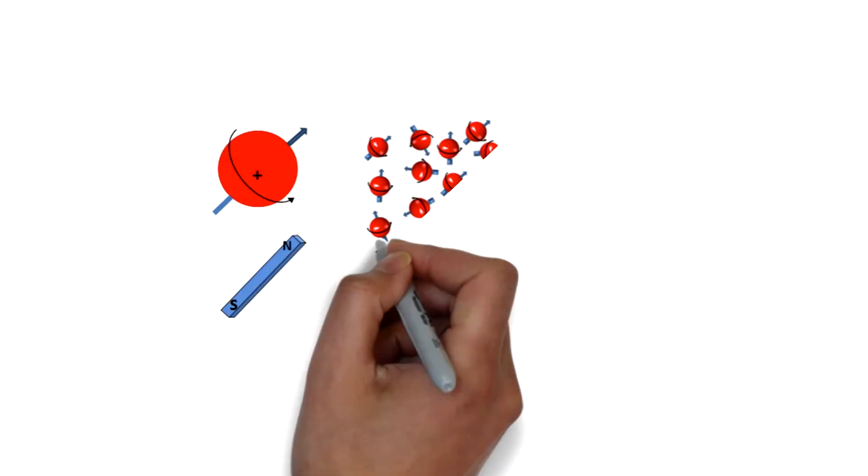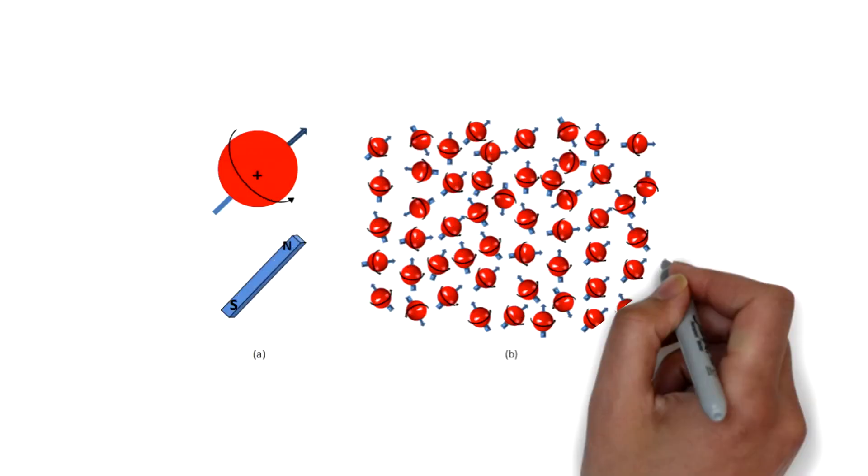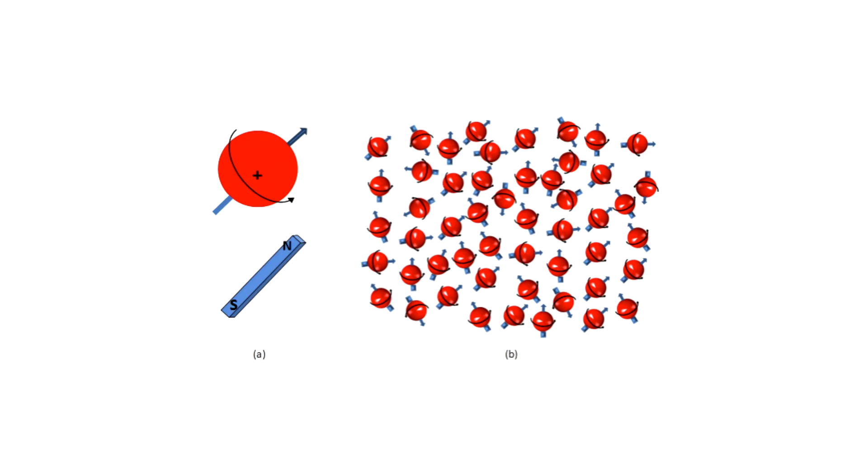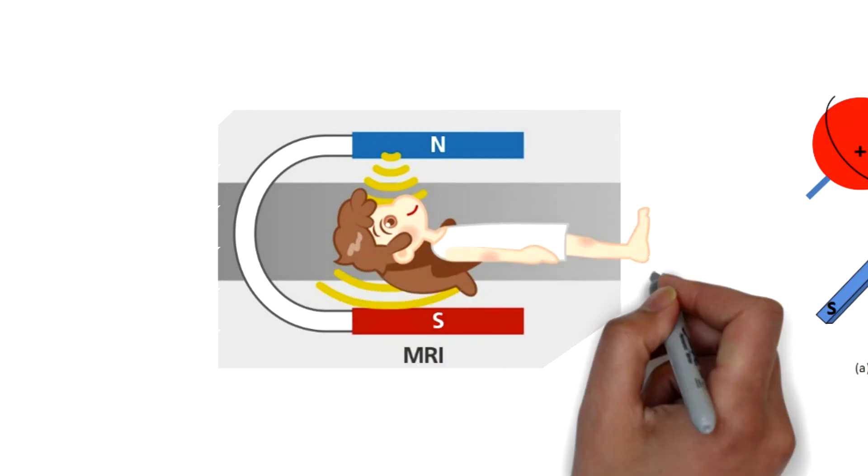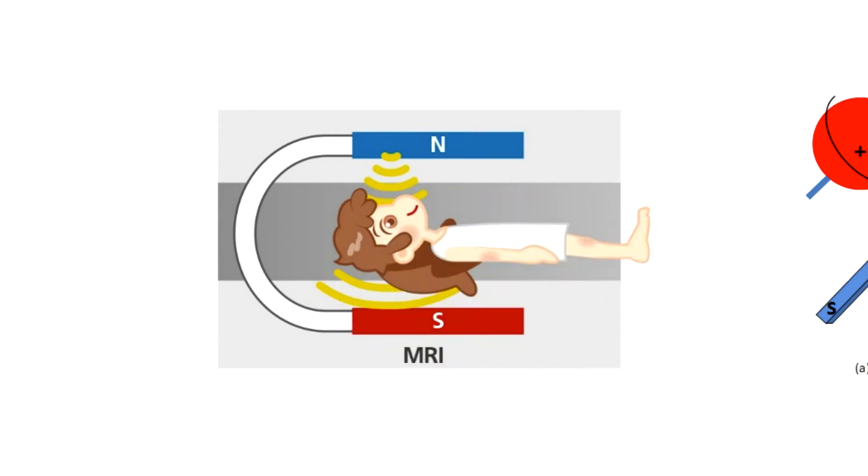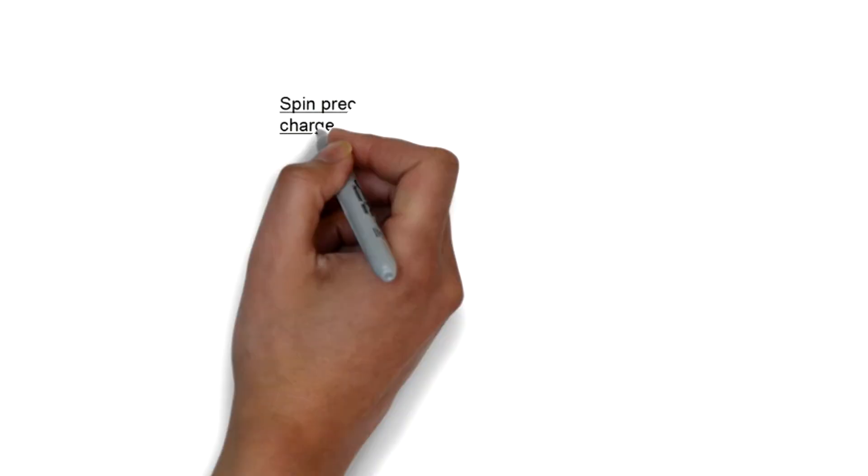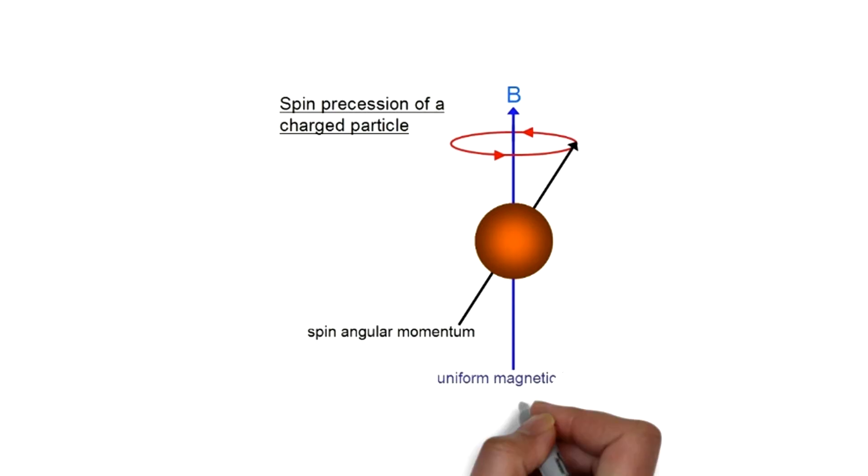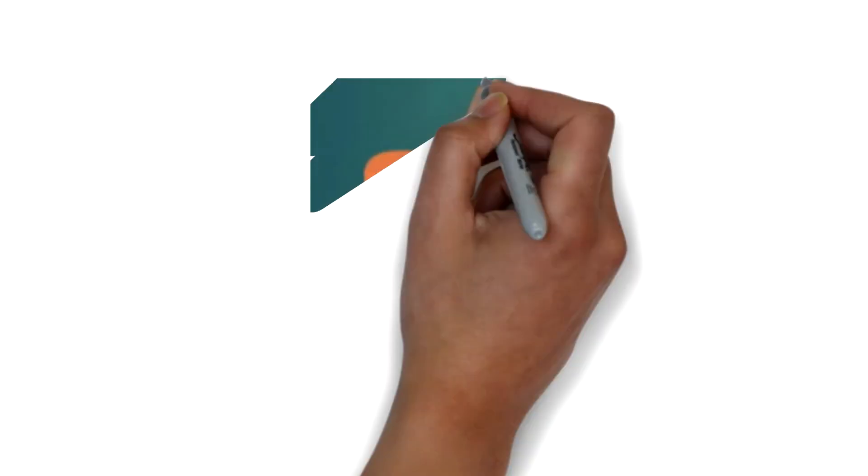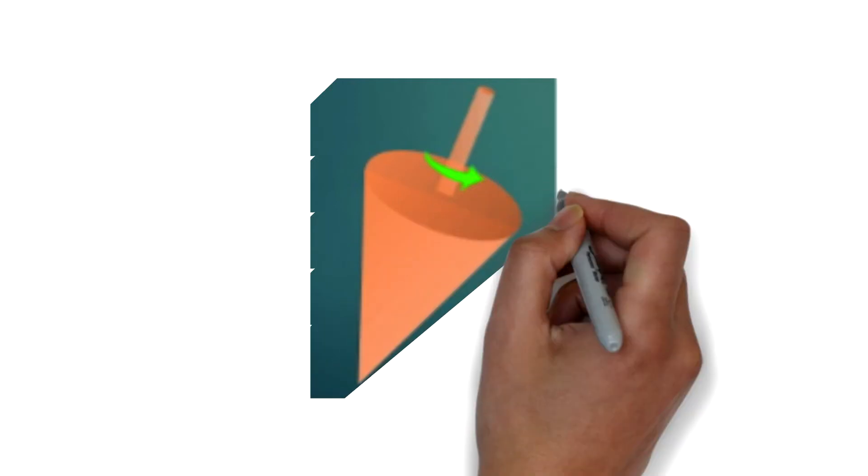Without an external magnetic field, magnetic moments are randomly oriented, but once exposed to the magnetic field, two conditions occur. One of them is the alignment of these nuclei and their magnetic moments with the external magnetic field. The second one is a secondary motion called a wobble, also known as precession. This is similar to a spinning top.